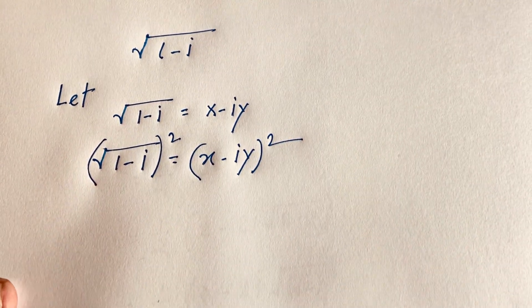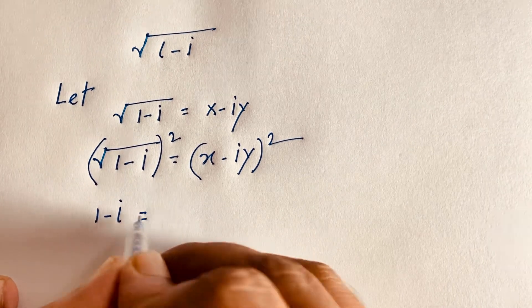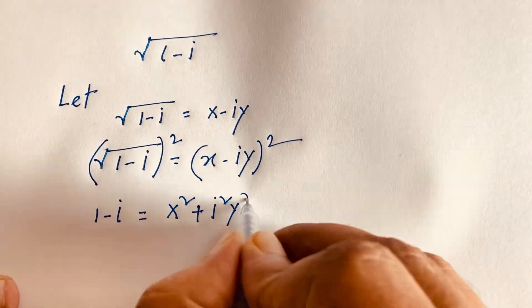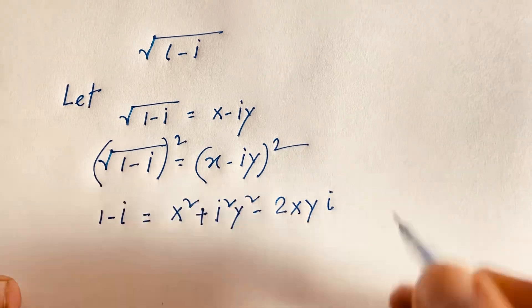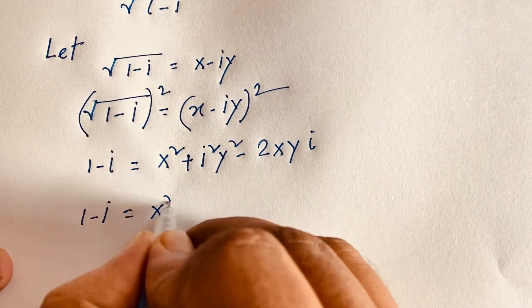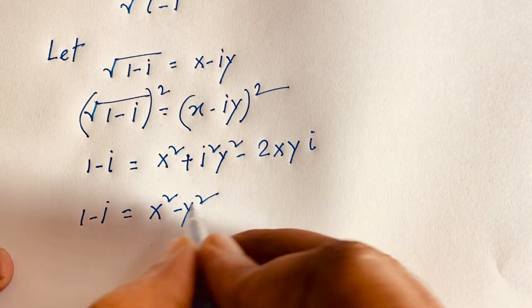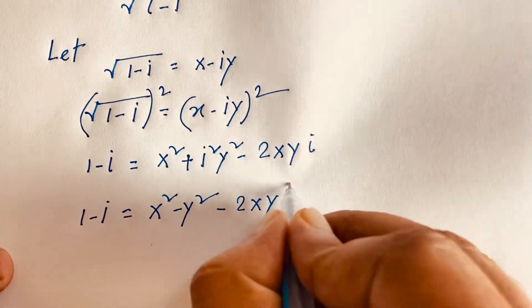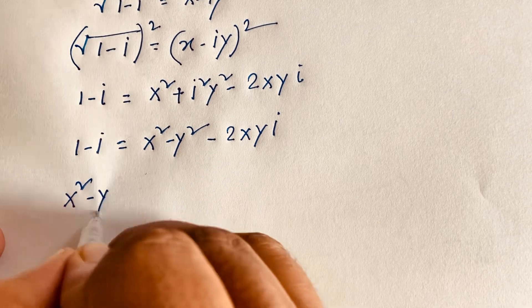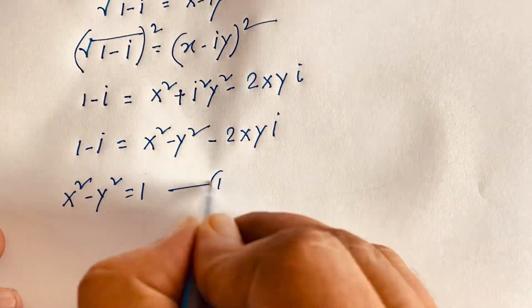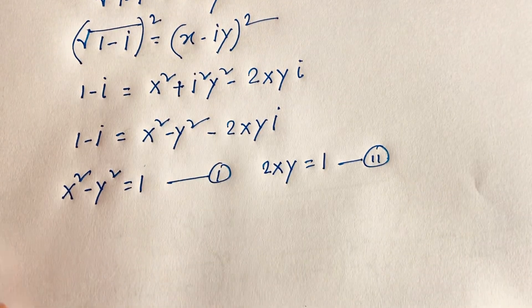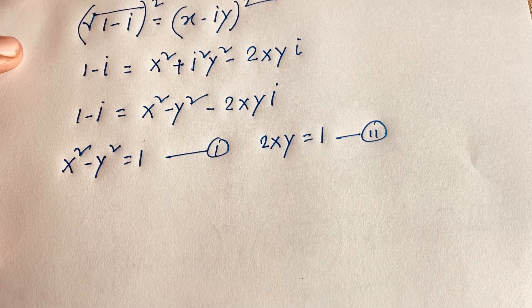The square roots cancel and we find: 1 minus i equals x² plus i²y² minus 2xyi. Since i² equals minus 1, this is (x² minus y²) minus 2xyi. Comparing real and imaginary parts: x² minus y² equals 1 (first equation), and 2xy equals 1 (second equation).